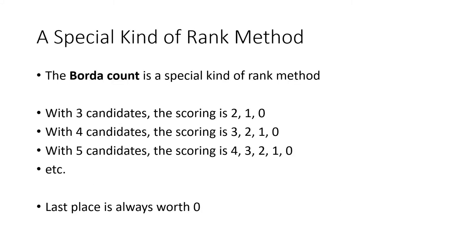There's a special kind of rank method when we pick the points in a very specific way — this is called the Borda count. When we have three candidates, the scoring is 2, 1, 0. This means first place votes are worth two points, second place votes are worth one point, and third place votes are worth zero points. For four candidates it goes 3, 2, 1, 0. Five candidates goes 4, 3, 2, 1, 0. The number of points goes down by one every time, and last place is always worth zero.